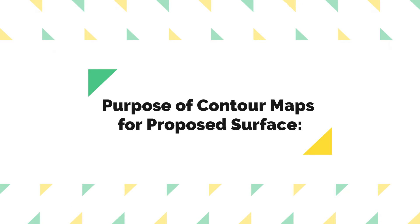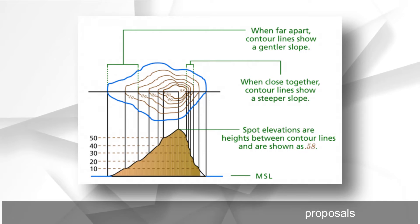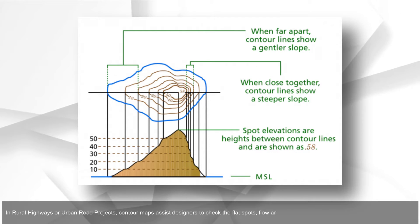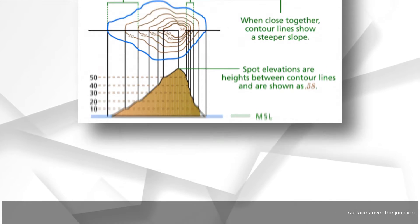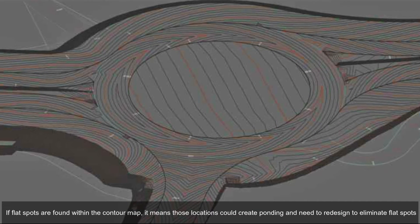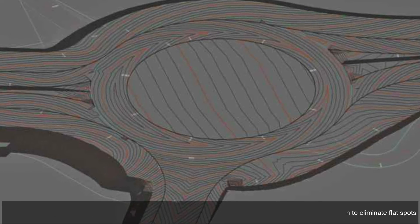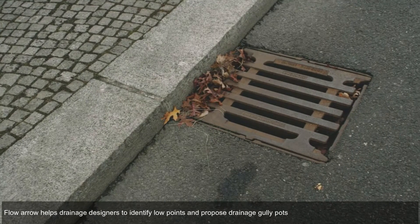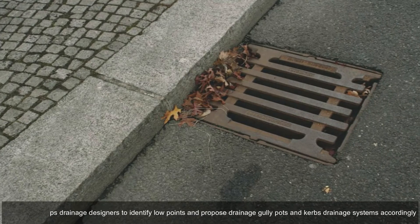Contour maps for proposed surfaces are created to check design proposals in rural highway or urban road projects. They assist designers to check flat spots, flow arrows, steep slopes, and uneven surfaces over junctions. If flat spots are found within the contour map, those locations could create ponding and need to be redesigned. Flow arrows help drainage designers identify low points and propose gully pots and kerb drainage systems accordingly.